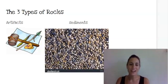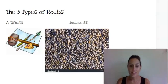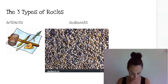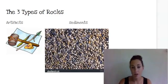Hey first graders, we are on Knowledge 7, Lesson 6: The Three Types of Rocks. Our first vocabulary word is artifacts. Say artifacts. An artifact is something that is typically man-made a long time ago.